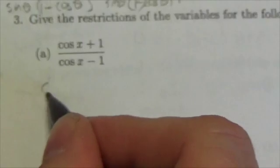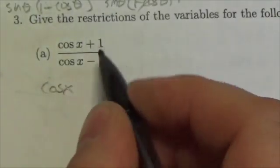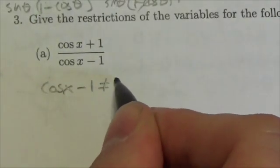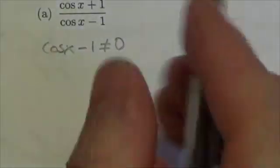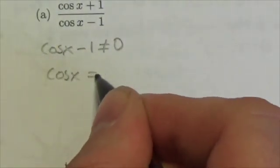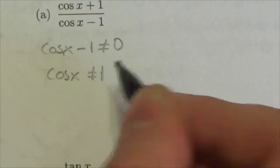All we're looking for here is we know that the cosine of x minus 1 cannot be allowed to equal 0. Which means the cosine of x cannot be allowed to equal positive 1. So now let's just think about that. Where does that occur?